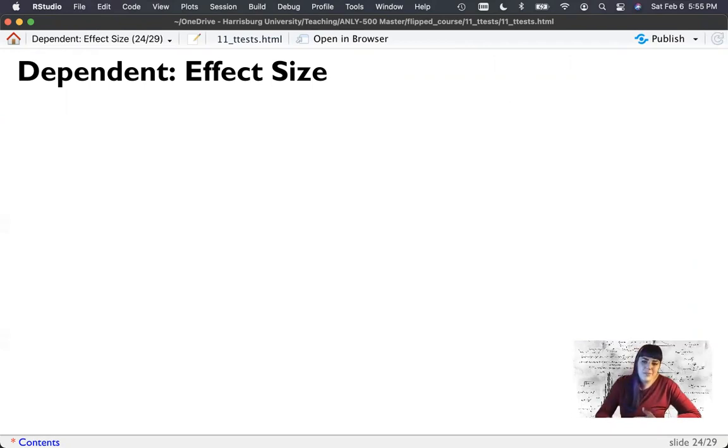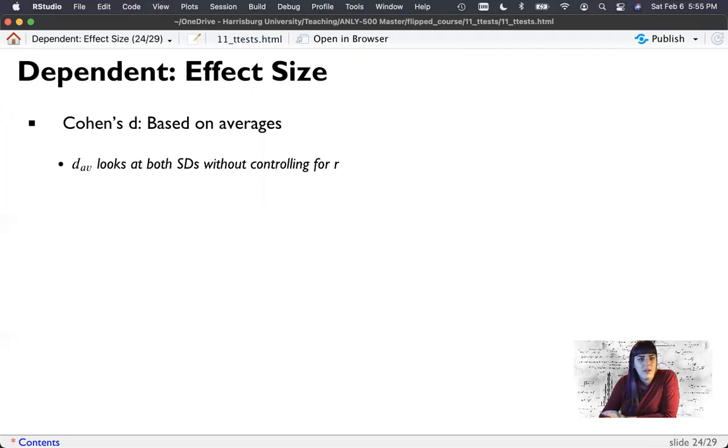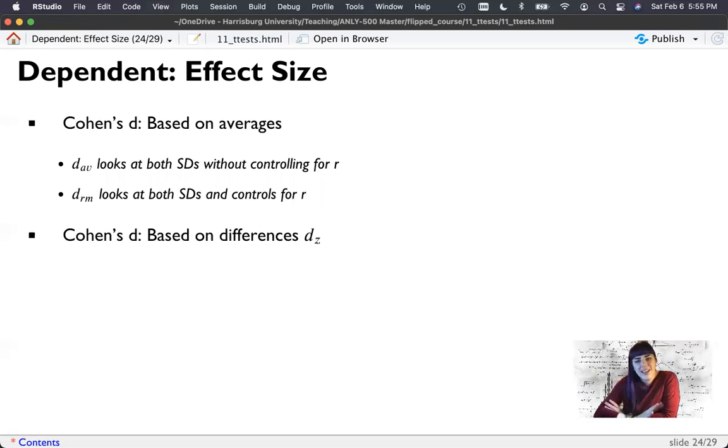Now, it's significant, but shouldn't this be the same effect as independent t, it's the same data in this example. And there are a couple of Cohen's Ds that we can calculate to control for people in this. And one of them is Cohen's Ds based on averages. So we're going to call this DAV. And this calculates, you know, time one minus time two divided by the average standard deviation. So that actually matches the formula for independent t. It doesn't control for the correlation between time one and time two. DRM looks at both standard deviations and actually does control for that correlation.